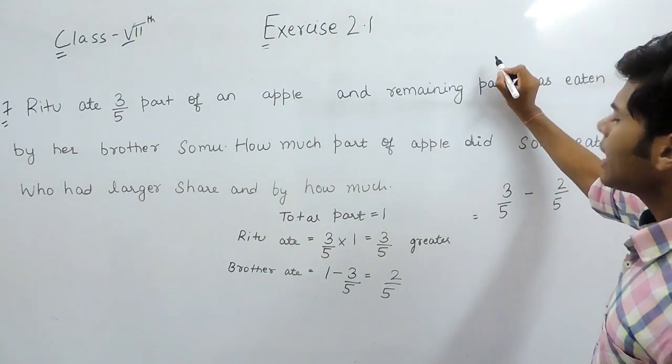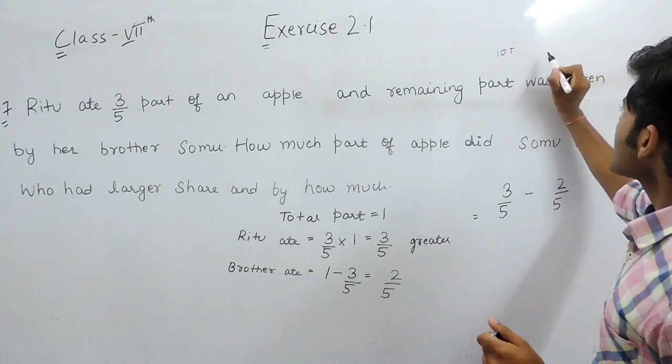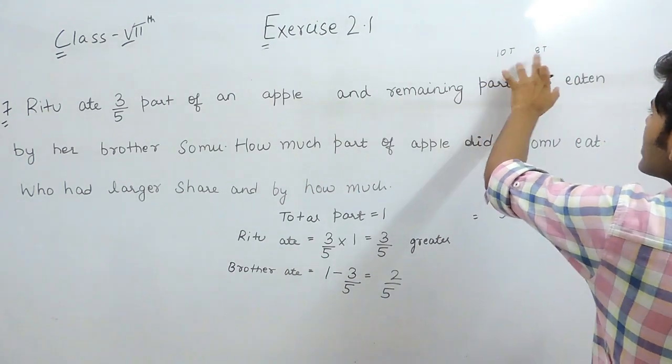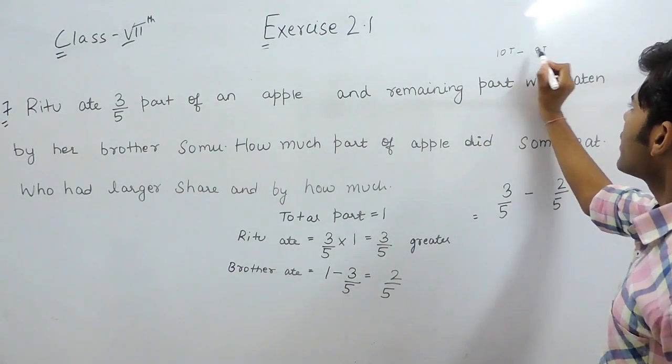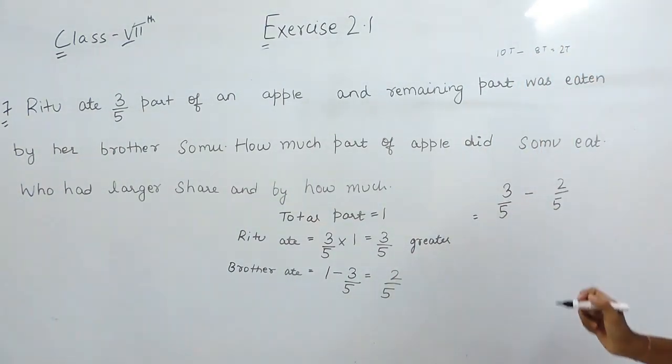Supposingly, I say that you are having 10 toffees and your brother is having 8 toffees. By how much are you having more toffees than your brother? You obviously say that I am having 2 toffees more than my brother.